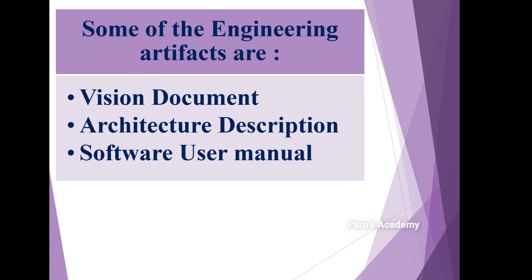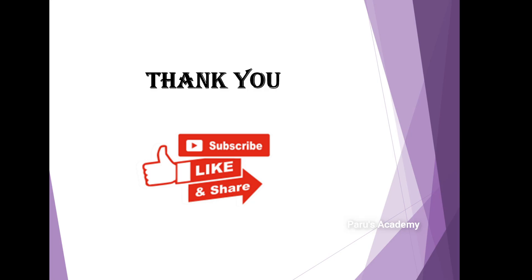In summary, there are three engineering artifacts: vision document, architecture description, and software user manual. The vision document covers everything about the product vision. Architecture description describes the model of the product. The software user manual provides instructions for how the user should use the software product. That's it for now — if you have any doubts, comment in the comment section. We will meet in the next class. Thank you for watching.